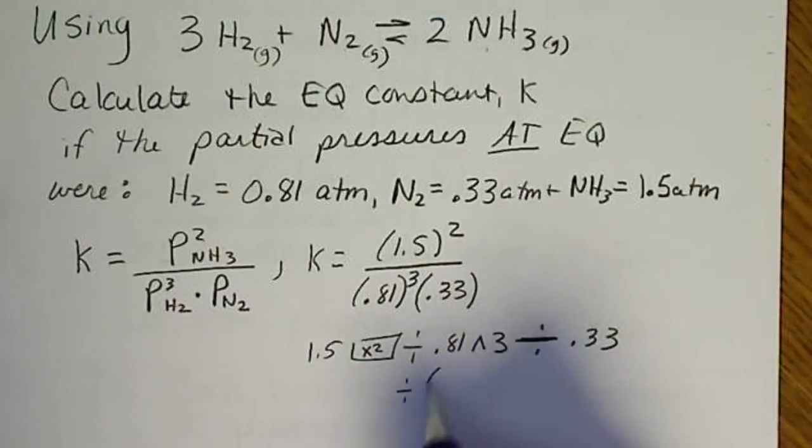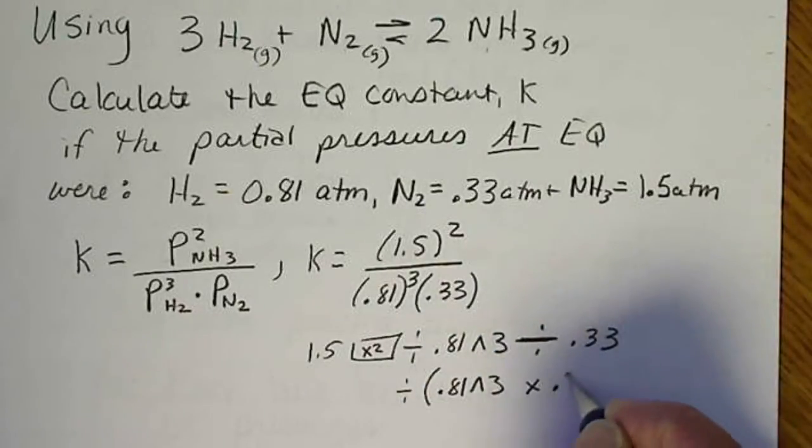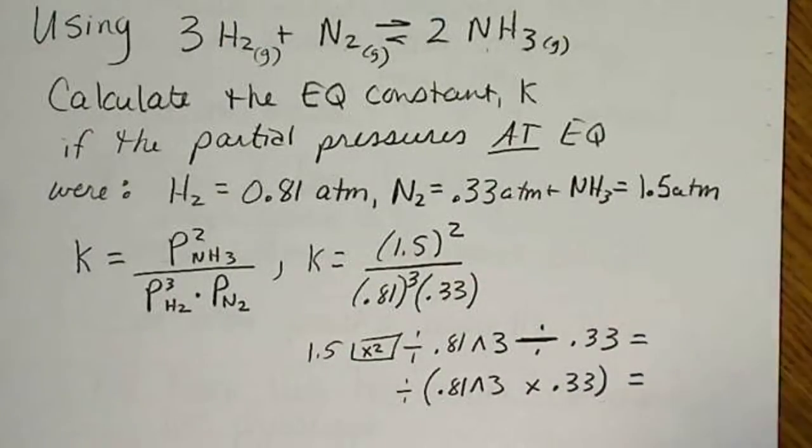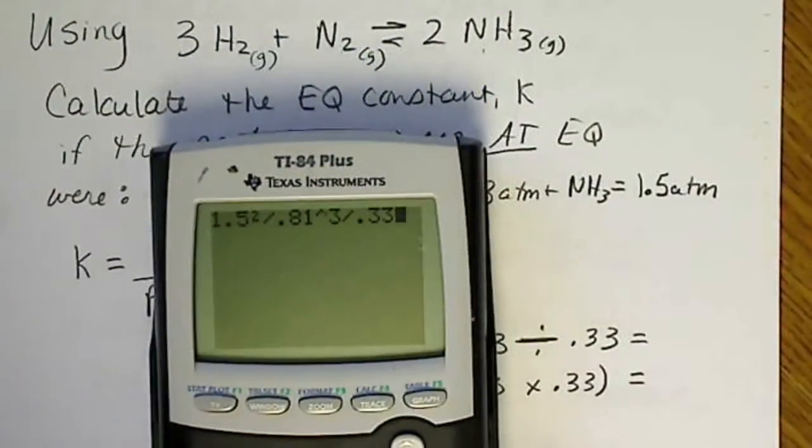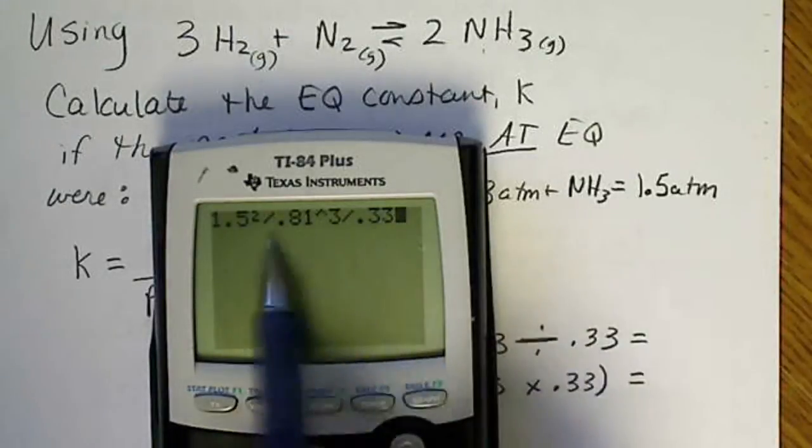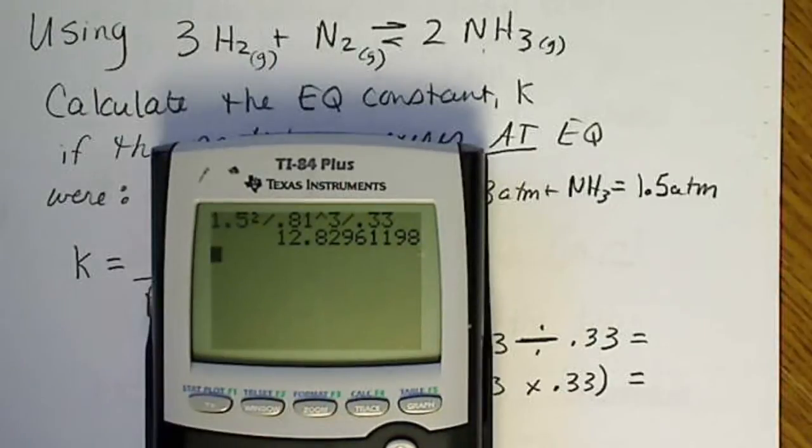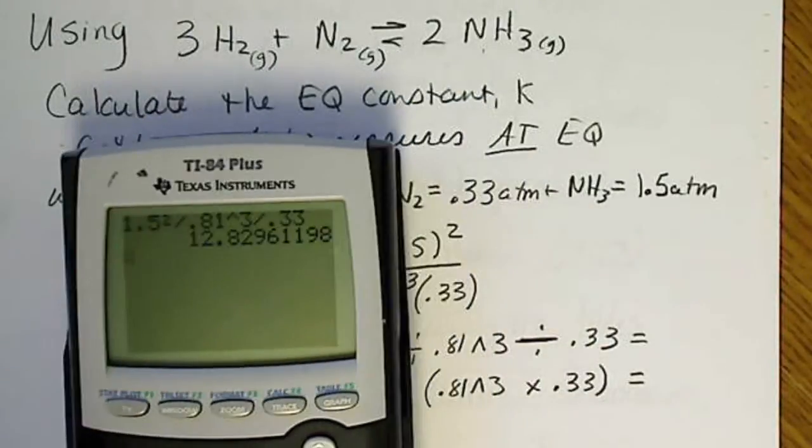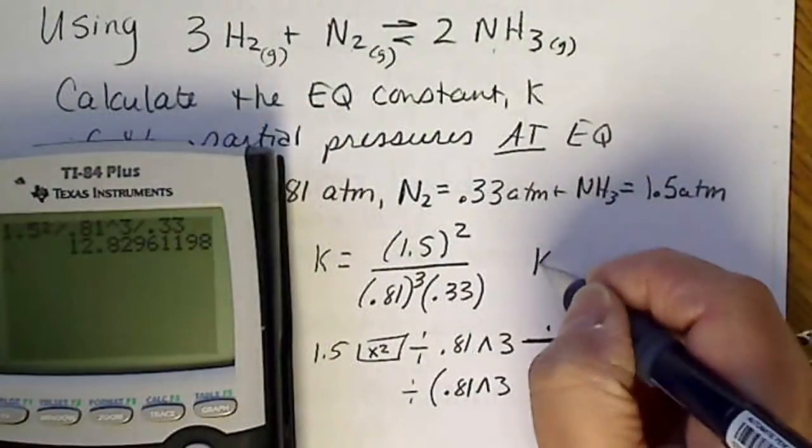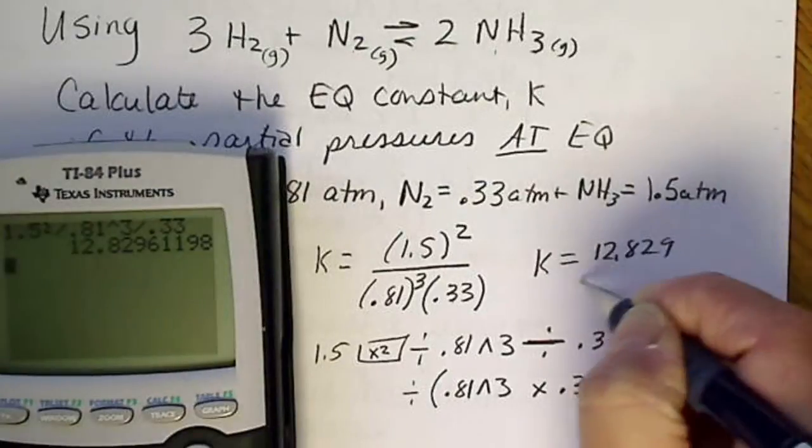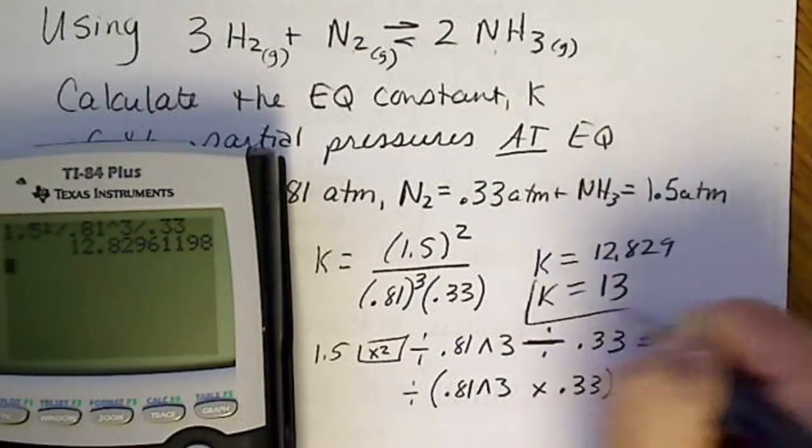So if you want to divide by this product, you have to put parentheses here so you could test yourself and make sure that you do indeed get the same answer. But getting these in the calculator correctly is half the battle. So 1.5 squared, divided by 0.81 raised to the third, divided by 0.33. We don't need extra parentheses, and the calculator knows to do the order of operations correctly. So we'll get 12.8. We might just round that to two significant figures and say K equals 13.